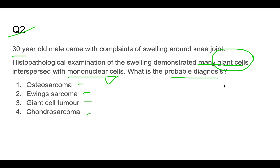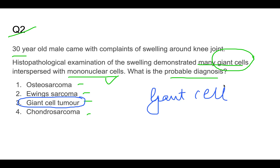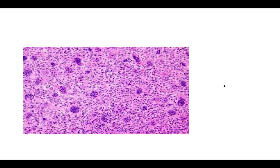The key word here is giant cells evenly spread along with mononuclear cells — this picture is very characteristic of giant cell tumor. In the microscopic picture you can see many giant cells with multiple nuclei, and in between there are mononuclear cells.